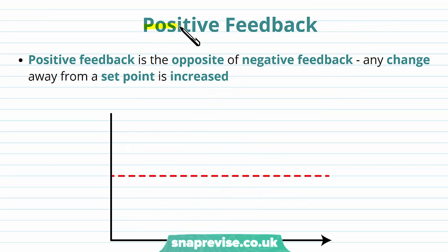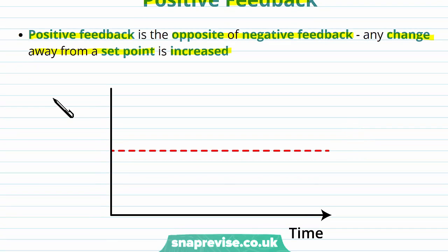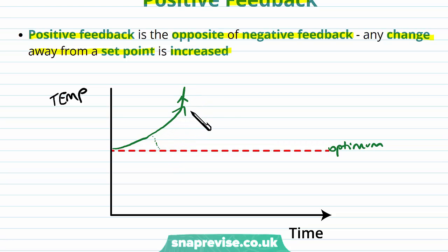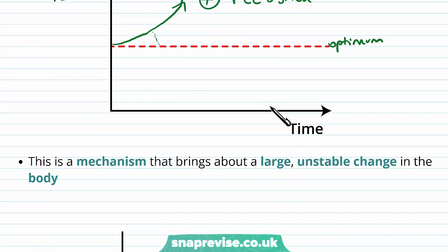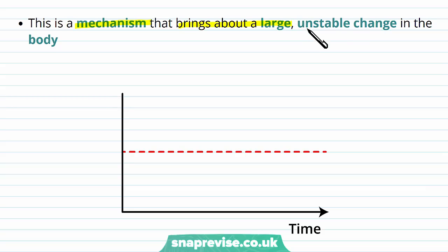We also have a process called positive feedback, which is basically the opposite of negative feedback. Any change away from a set point or optimum is actually reinforced or increased. If we look at a similar graph for temperature, negative feedback would usually bring a deviation back down again, but positive feedback actually encourages it to keep going. This mechanism brings about a large, unstable change in the body — if the temperature kept going up, it would be a very large, unstable change that keeps continuing.